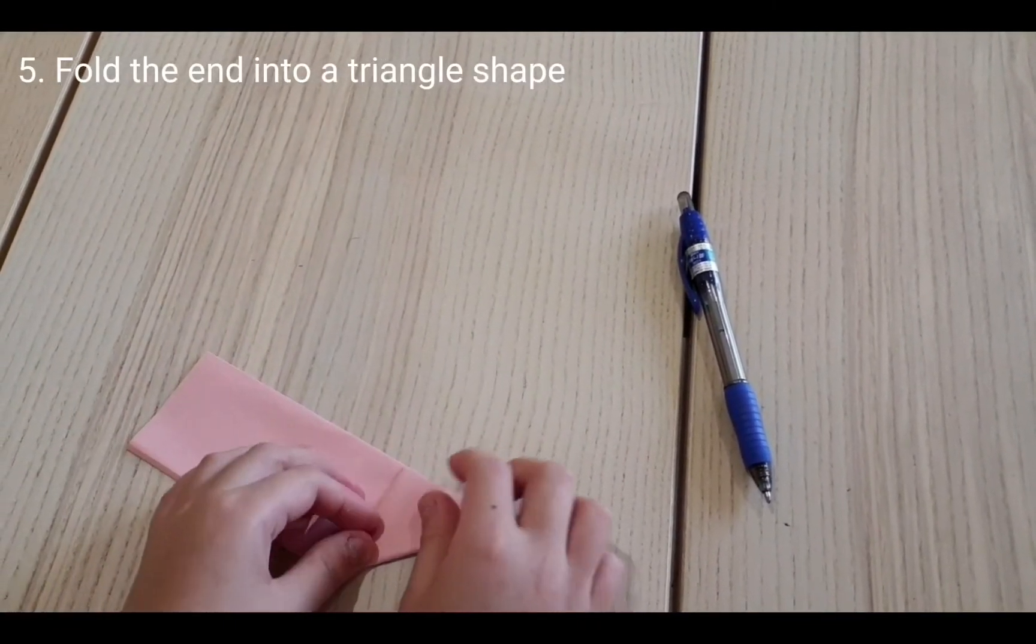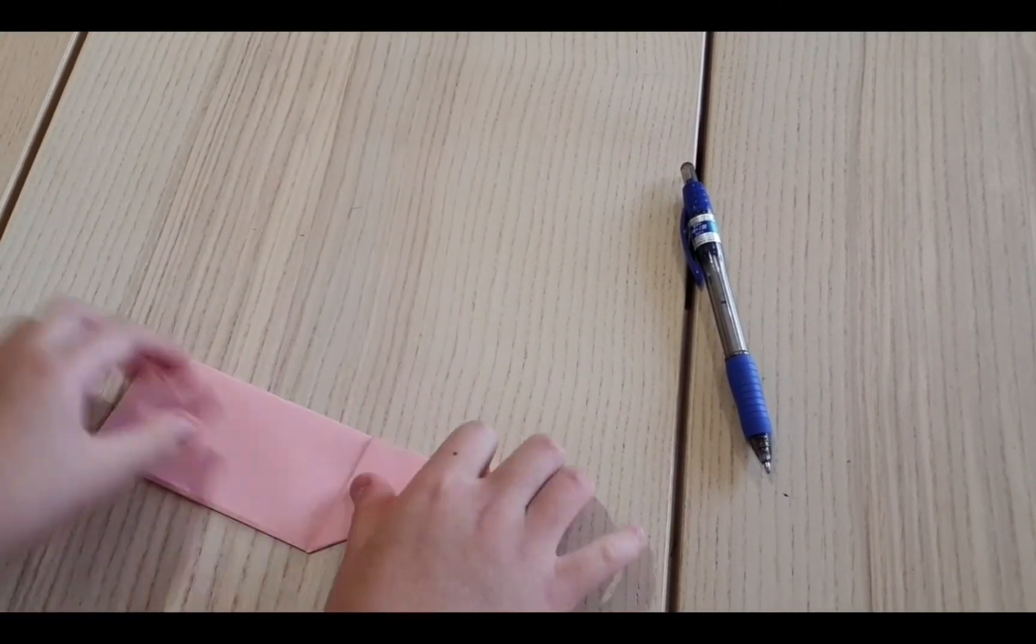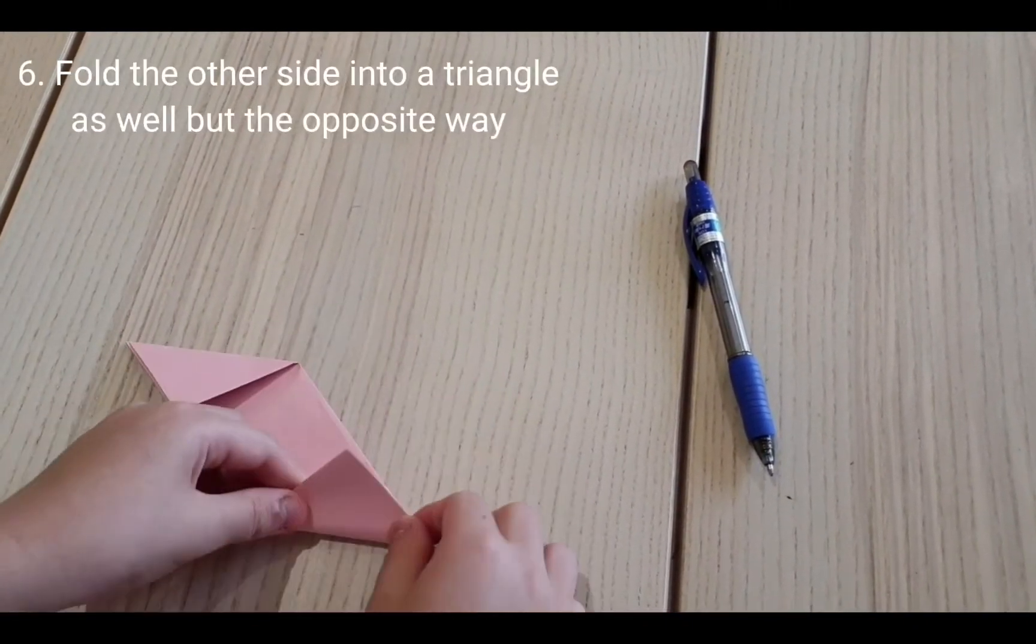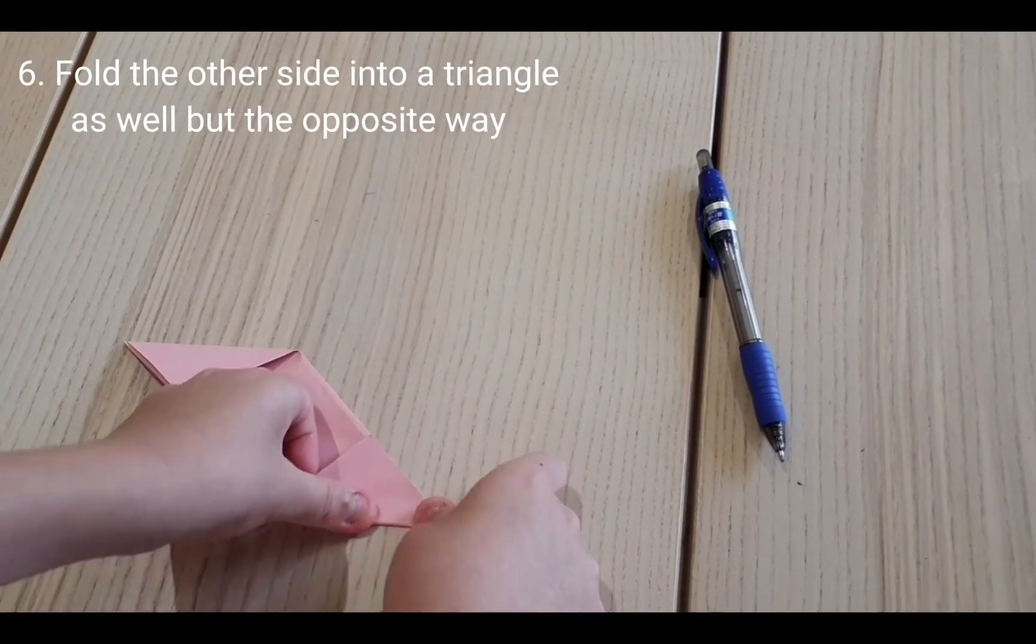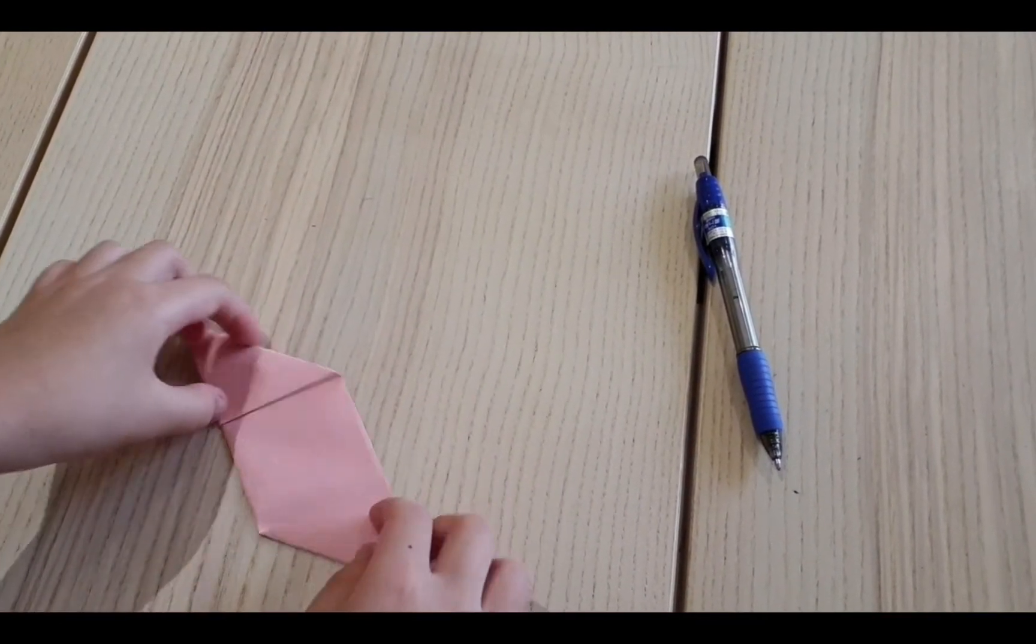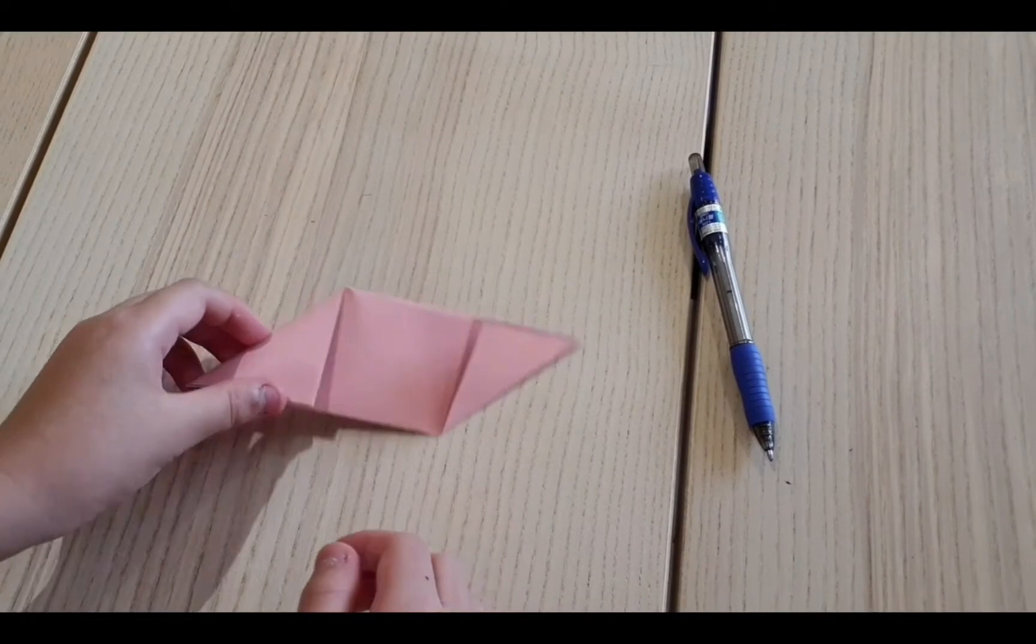Okay, next, fold it to make a triangle shape. Do it for the other side too, but make sure you're doing it the opposite way to make it like that.